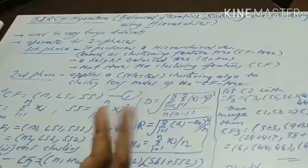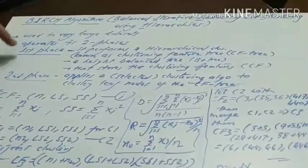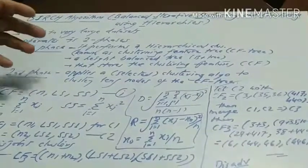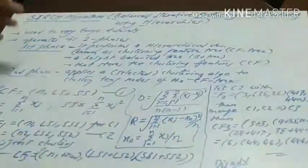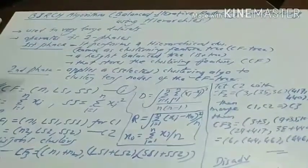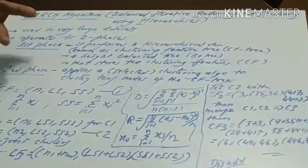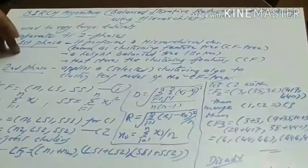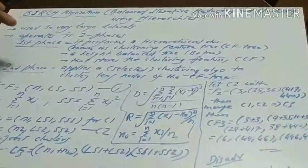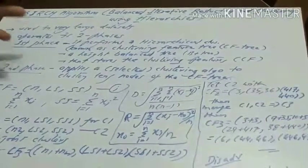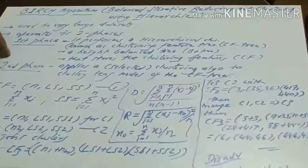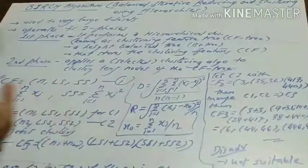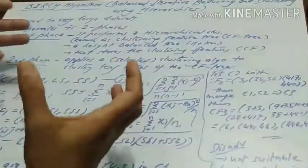The BIRCH algorithm is working in two phases. In the first phase, we perform the hierarchical clustering over the dataset and construct a clustering features tree or CF tree using some clustering features. It is a type of height-balanced or B-plus type of tree that stores clustering features information about clusters. In the second phase, we apply a selected clustering algorithm, any type of clustering algorithm, to cluster the leaf nodes of the CF tree.